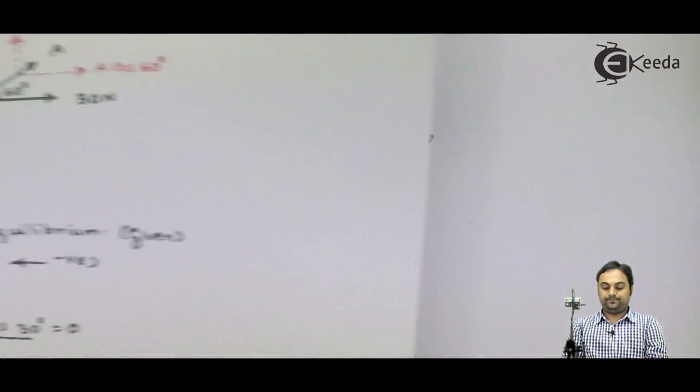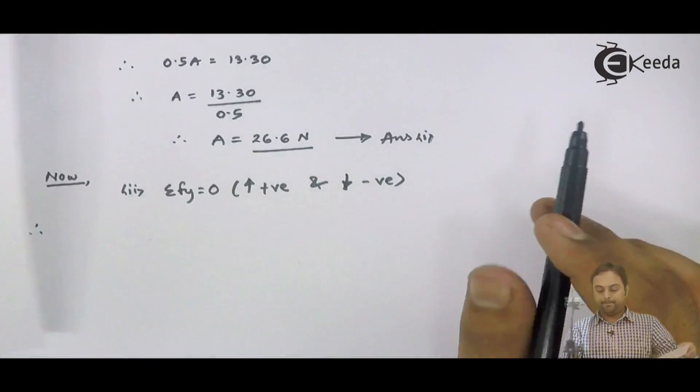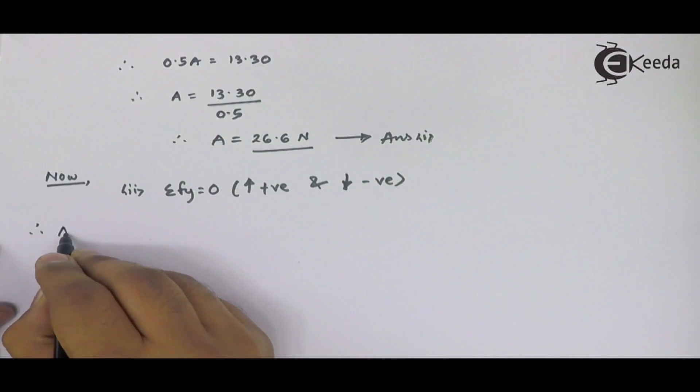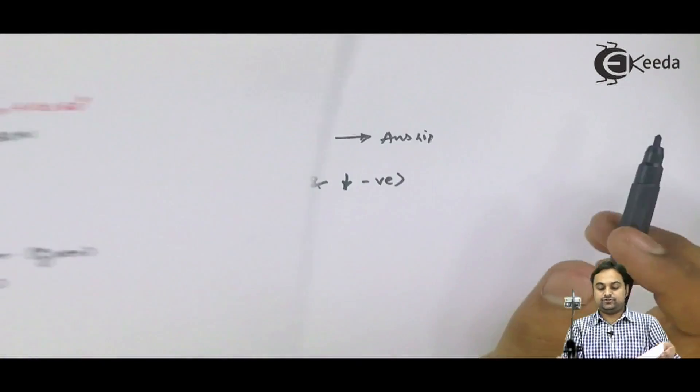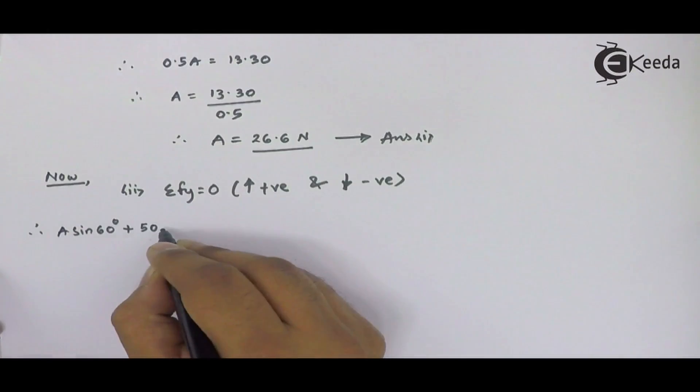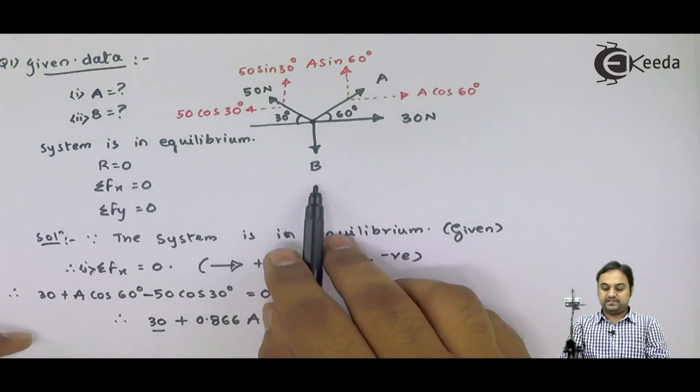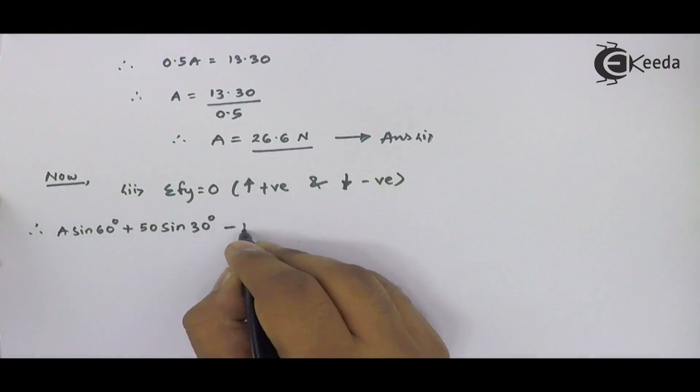Hence, here we have A sin 60 as positive upward. 50 sin 30, this is also upward, so positive. Force B is acting downward, so negative. Therefore, if I calculate this, instead of A I will write down 26.6 sin 60 plus 50 sin 30, that comes out to be 25, minus B is equal to 0.